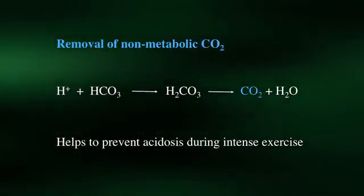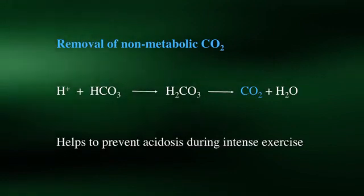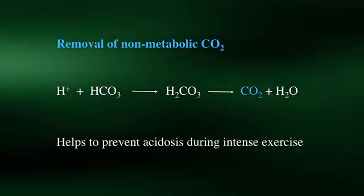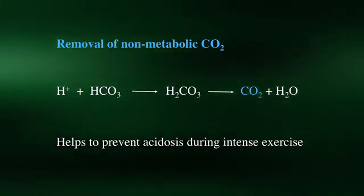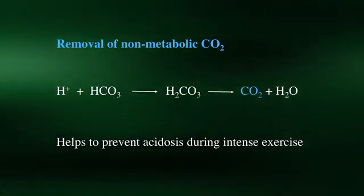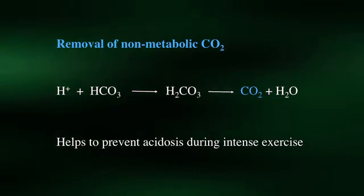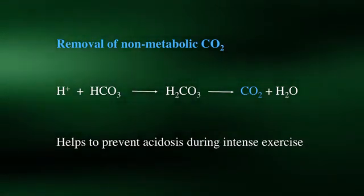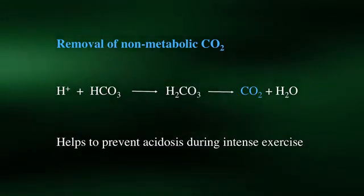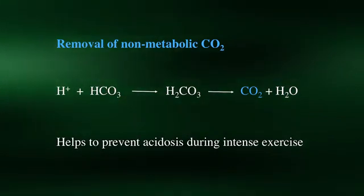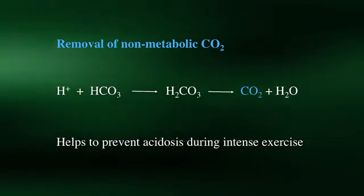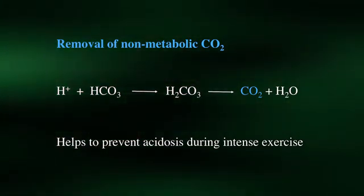As the name implies, nonmetabolic carbon dioxide does not come from the metabolic breakdown of our macronutrients, but instead comes from the buffering of acids produced during high-intensity exercise. To help prevent the muscles and blood from becoming too acidic, the hydrogen ions are buffered by bicarbonate, which is then converted to carbon dioxide. This nonmetabolic carbon dioxide is also transported to the lungs for removal. In this way, the respiratory system fulfills its third major role, that of acid-base regulation during exercise.